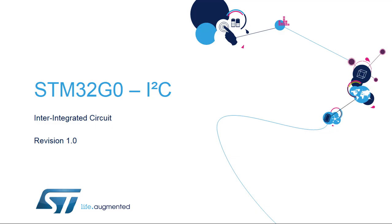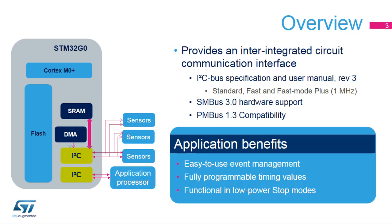Welcome to this presentation of the STM32 I2C interface. It covers the main features of this communication interface, which is widely used to connect devices such as microcontrollers, sensors, and serial interface memories. The I2C interface is compliant with the NXP I2C bus specification and user manual revision 3, the SMBus system management bus specification revision 2, and the PMBus power system management protocol specification revision 1.1.